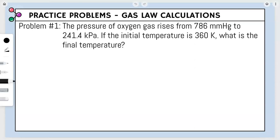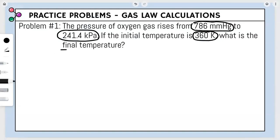Let's do some practice problems. Problem one: the pressure of oxygen gas rises from 786 mmHg to 241.4 kilopascals. If the initial temperature is 360 Kelvin, what is the final temperature? We are given 786 mmHg, 241.4 kPa, and 360 Kelvin, and we need to solve for final temperature.